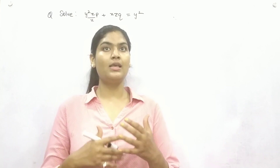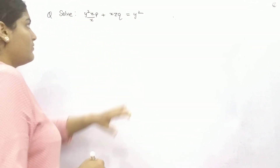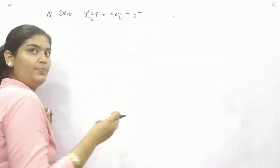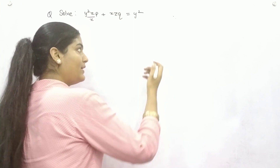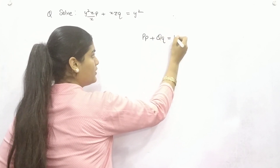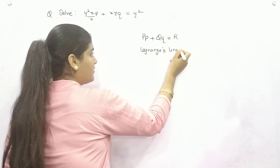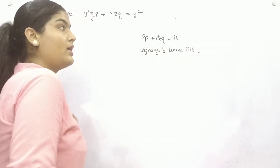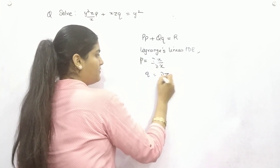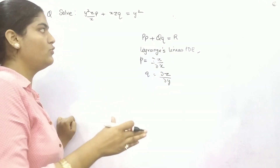What does it mean and how can we say that a given form is Lagrange's linear differential equation? If you have an equation in the form of capital P times small p, plus capital Q times small q, equals R, that is the form of Lagrange's linear PDE. Here, small p is the partial differentiation of the function with respect to x, small q is the partial differentiation with respect to y, and their coefficients given in the question will be P, Q, and R respectively.